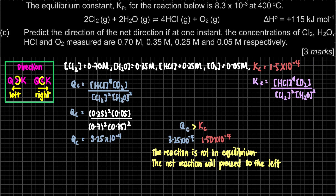The direction is either right or left. To determine it, compare Q and K. K is usually given in the question. Q is at any instant — typically not at equilibrium. First state that the system is not in equilibrium, then state which direction it will proceed to reach equilibrium. The reaction reaches equilibrium when Q equals K. That is all for question number 5 for the year 2022-2023.